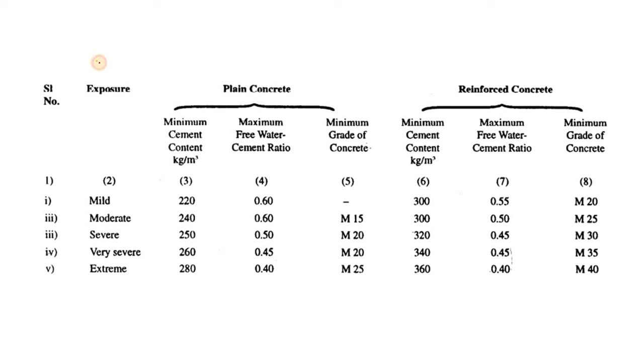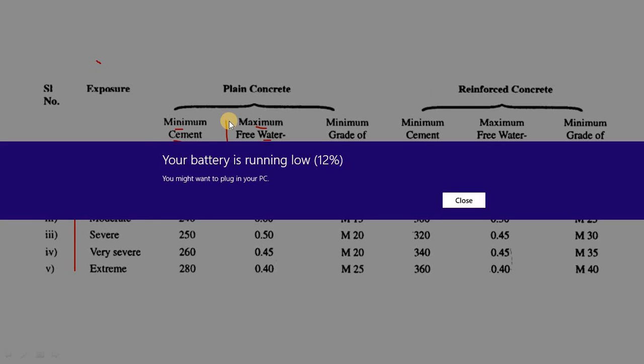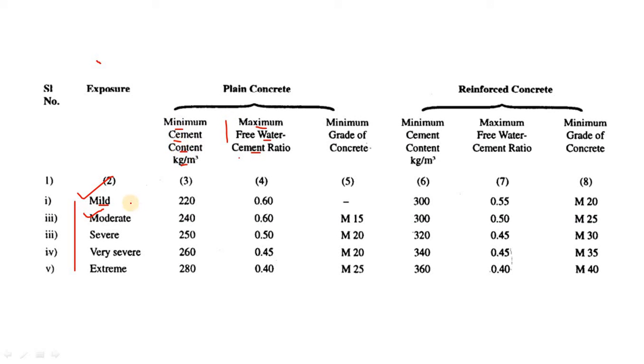From durability point of view, your minimum cement content criteria is fixed. What is that? This is based on your exposure - that's why I made a separate video for exposure only. This is how exposure defines your mix design. Based on exposure, your minimum cement content is different. The minimum cement content for mild weather is 220 kg and for extreme condition it is 280 kg.